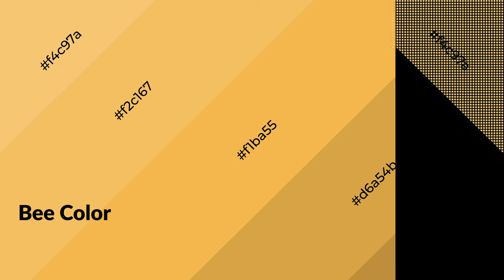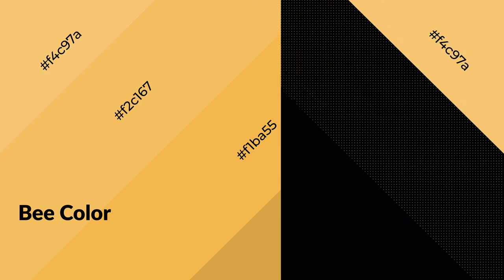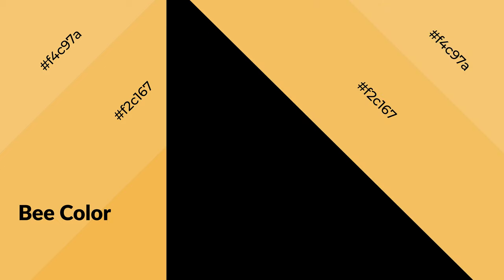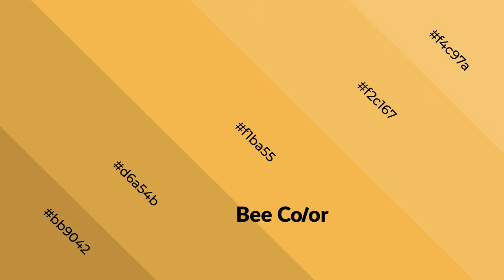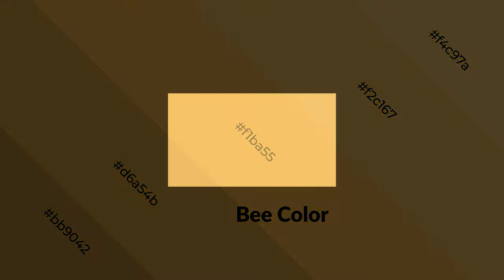Warm colors are symbols of warmth, fire, heat and sunshine. They also evoke joy, passion, love and even anger emotions. You can see them used in restaurants and gyms.